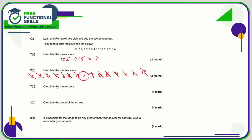The mode is the one that crops up the most. 7 is the most frequently occurring value, so the mode is 7. And the range is the biggest take away the smallest: 12 take away 2, which is 10.